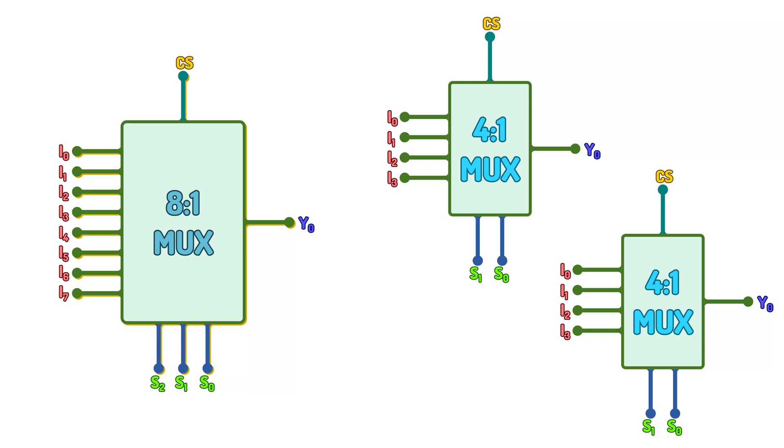We can use two 4-to-1 multiplexers. Each 4-to-1 multiplexer can control four inputs each, but the total number of outputs from these two multiplexers will be two. However, an 8-to-1 multiplexer provides us with one output.